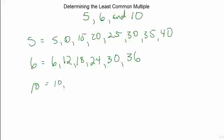I have ten, twenty, thirty. Oh, lo and behold, thirty is a multiple of all three of these numbers now.